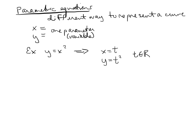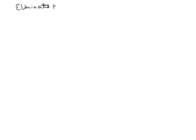The whole reason why we would ever want to do this is parametric equations give motion to a curve. They not only say we've got y equals x squared, but they say we're going to move along y equals x squared starting at a certain point and then ending at a certain point. So let's eliminate the parameter to find the Cartesian equation.